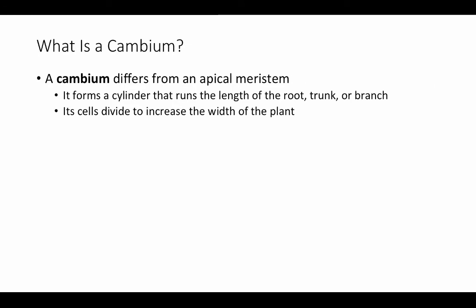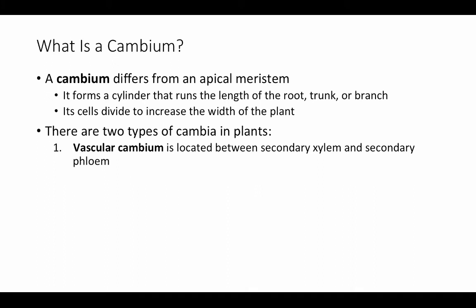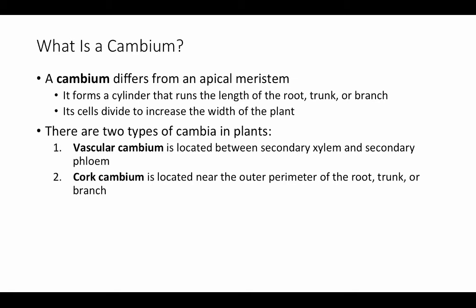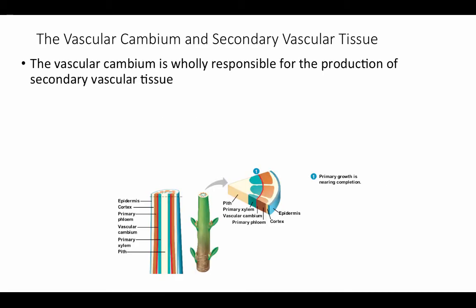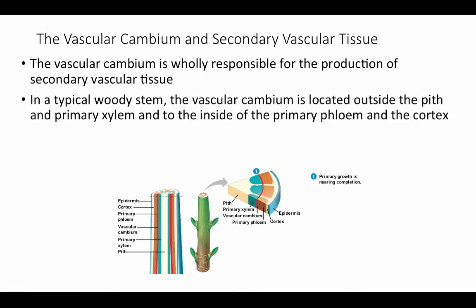What is a cambium? A cambium differs from an apical meristem: it forms a cylinder running the length of the root, trunk, or branch, and its cells divide to increase the width rather than the length of the plant. There are two types of cambia: the vascular cambium, located between the secondary xylem and secondary phloem, and the cork cambium, located near the outer perimeter. In a typical woody stem, the vascular cambium is located outside the pith and primary xylem and to the inside of the primary phloem.